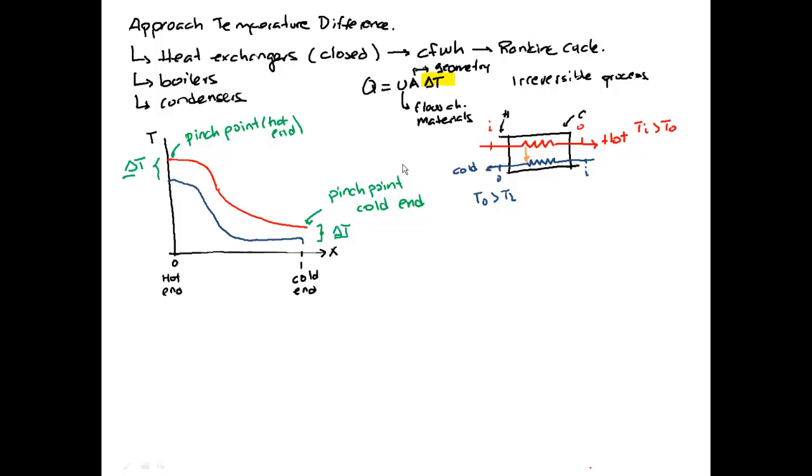So basically, the approach temperature difference is the difference between the cold and the hot, the difference between the two streams at either end of the heat exchanger.